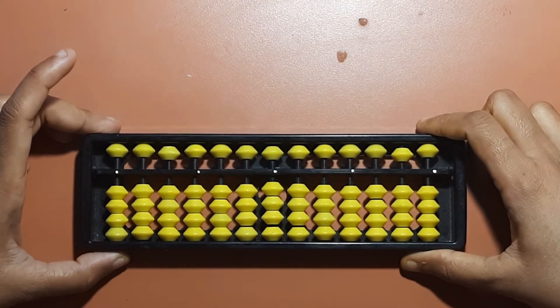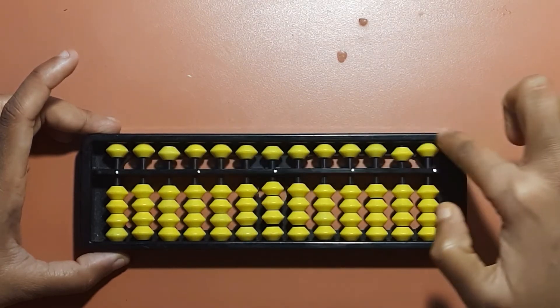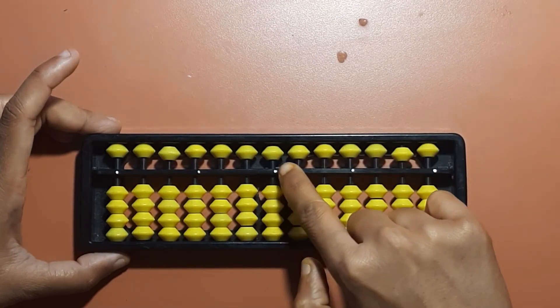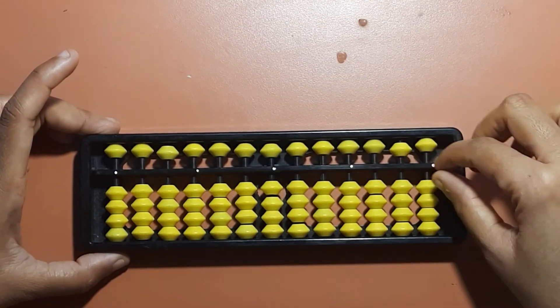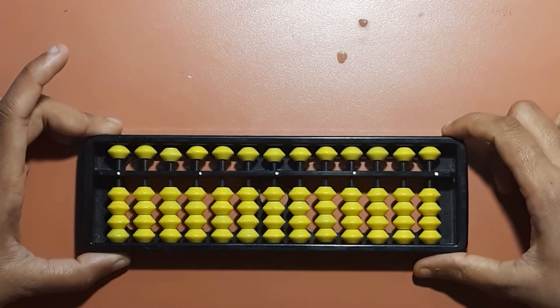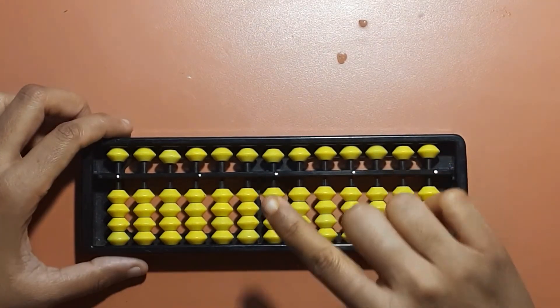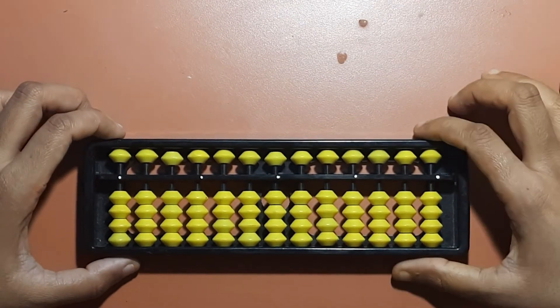Why is it called the answer bar? Because when the beads—these yellow buttons are called the beads—when these beads are attached to the answer bar, it gives you a value. Otherwise, when none of the beads are attached to the answer bar, its value is zero. Right now, its value is zero. When either of the beads is attached to the answer bar, it gives you some value.